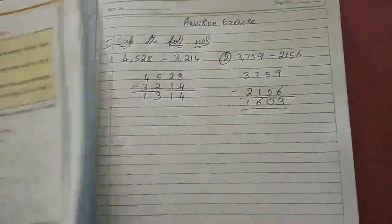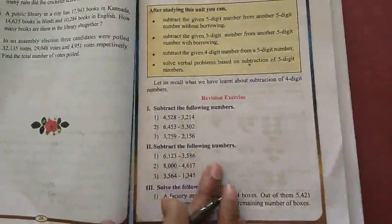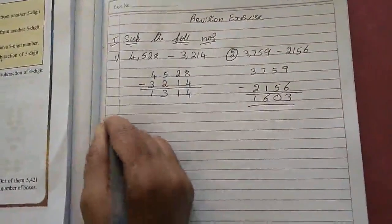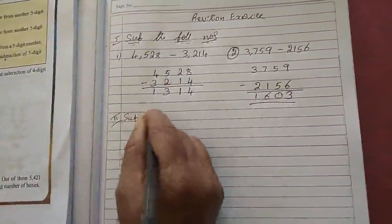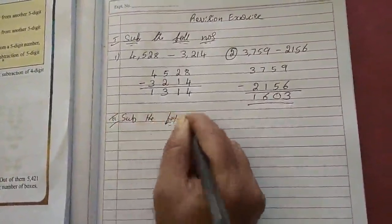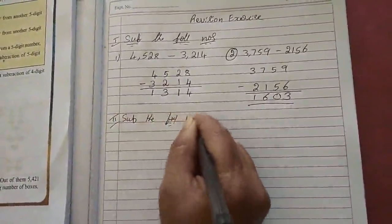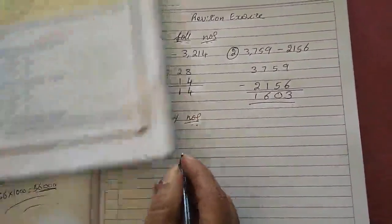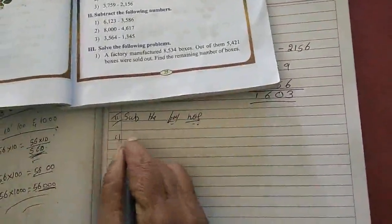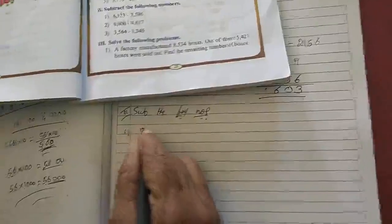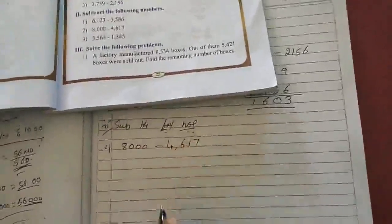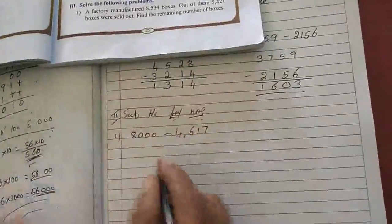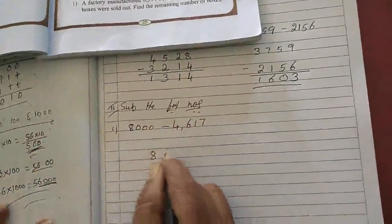Now the second section — separate the following numbers. Second section is also the same. I will do only one sum. See: from 8,000 minus 4,617. Write it and make columns.